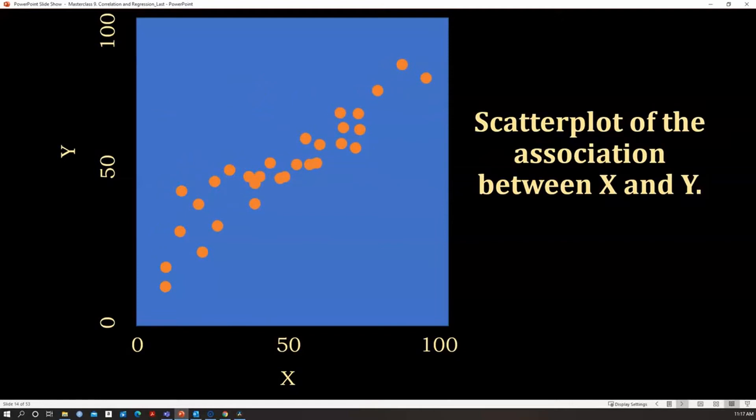In this scatterplot, for each participant, we have one dot, and that dot is located in a way that gives us information about their score in the X variable and their score in the Y variable.